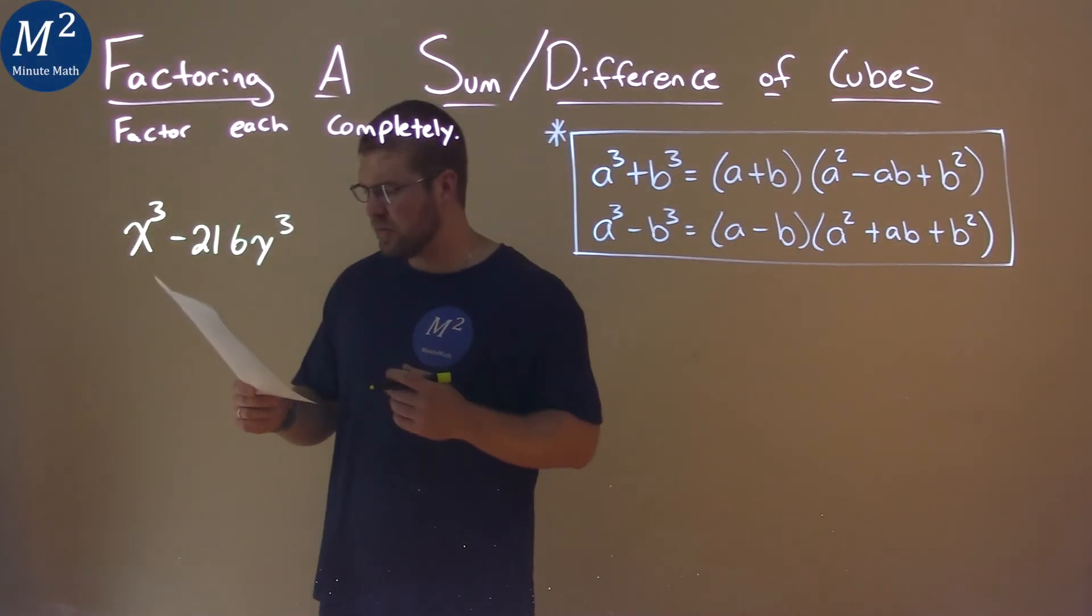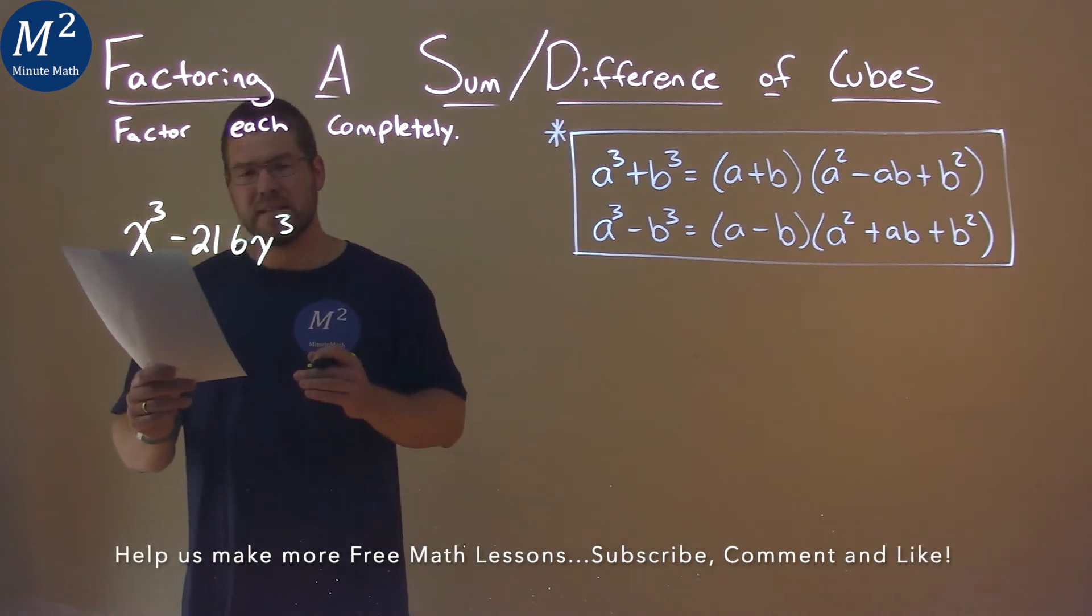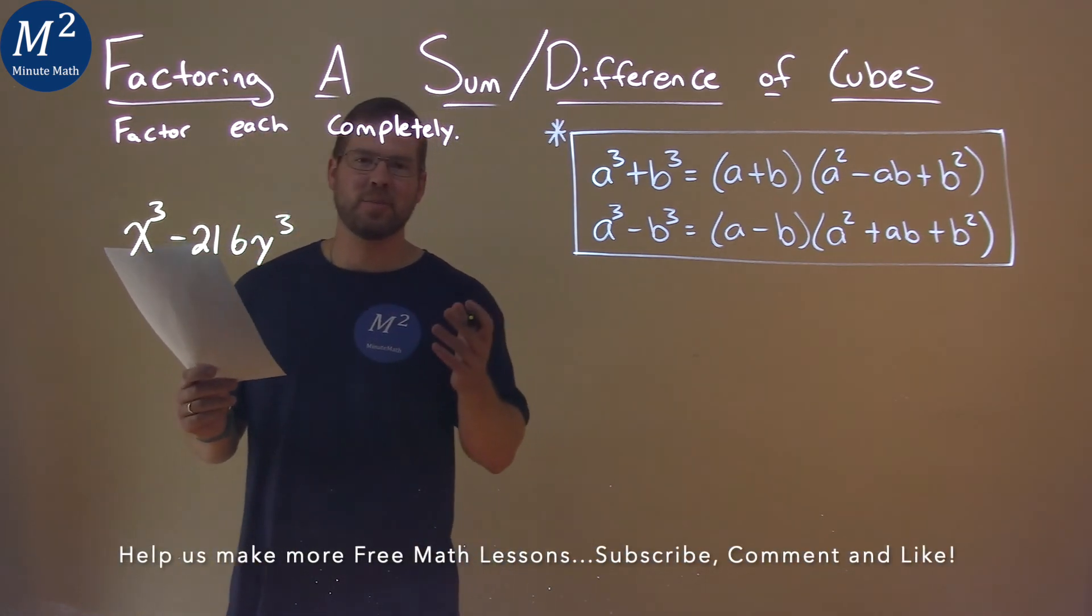We're given this problem right here. x to the third power minus 216y to the third power. We need to factor completely.